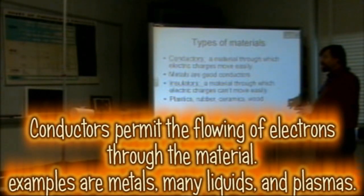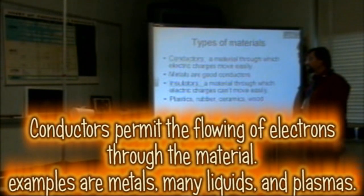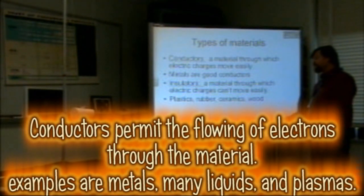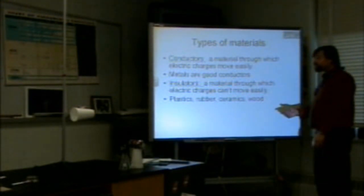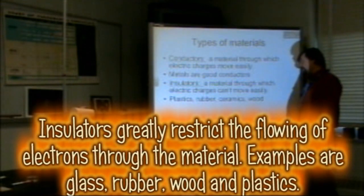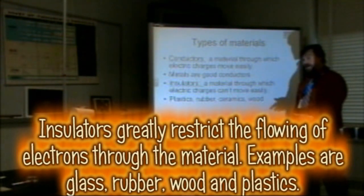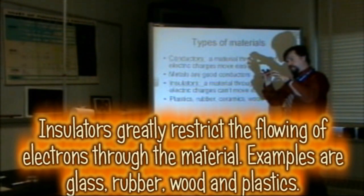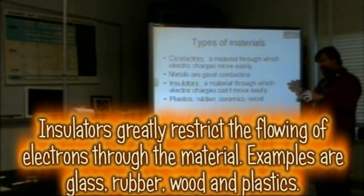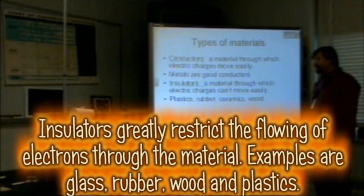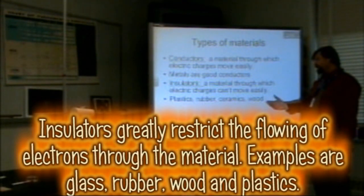Types of materials: conductors are materials through which electrons can move easily. Many metals are good conductors — they have free electrons that are able to move around. Insulators are materials through which electric charges can't move easily. This is why insulators will pick up static charges: when you put electrons on an insulator, they become static and stay still until they move onto another object. Examples of insulators are plastics, rubbers, ceramics, and wood.